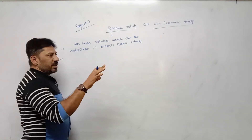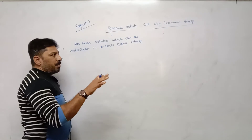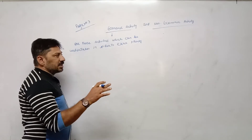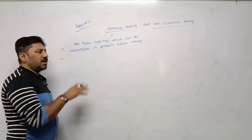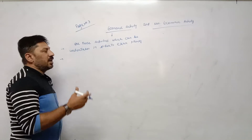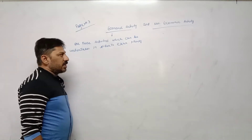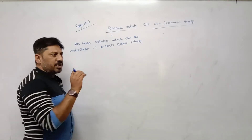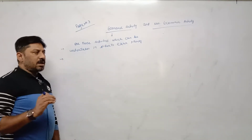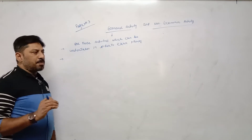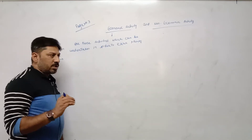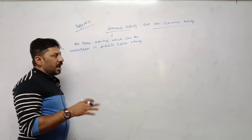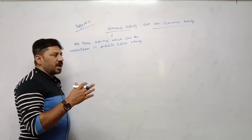Page number one: learn only two sentences — the Sanskrit meaning and the Greek version. Page number two: only the name of the economist, the year in which they published the book, and the name of their books.